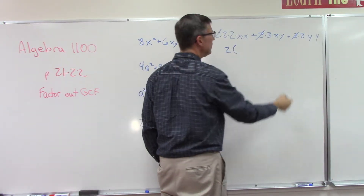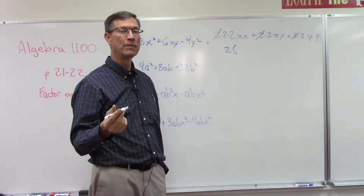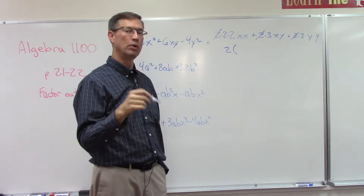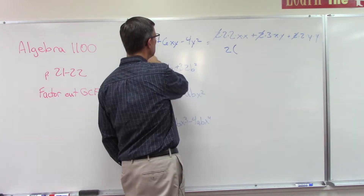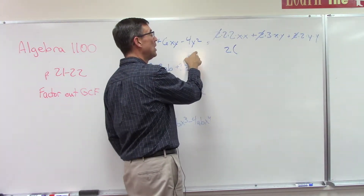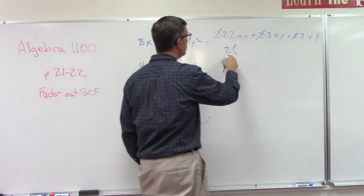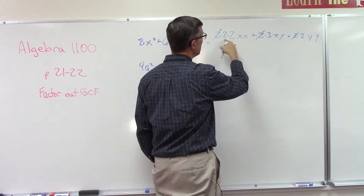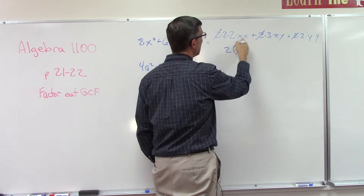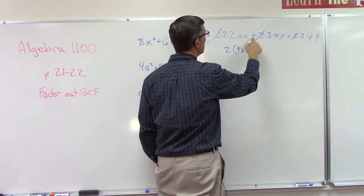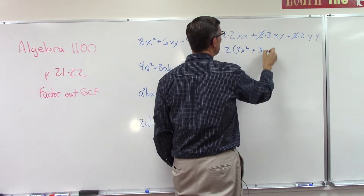Now I'm going to put parentheses and put in here everything that's left — it's kind of like doing distributive property but in reverse. So we're going to go back and see that if I factor out a 2, what am I left with?